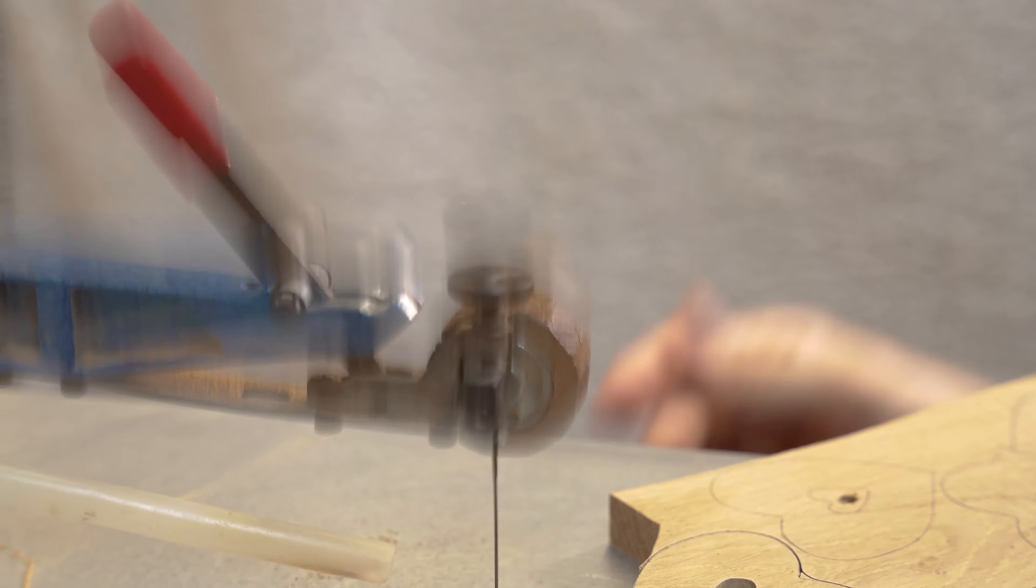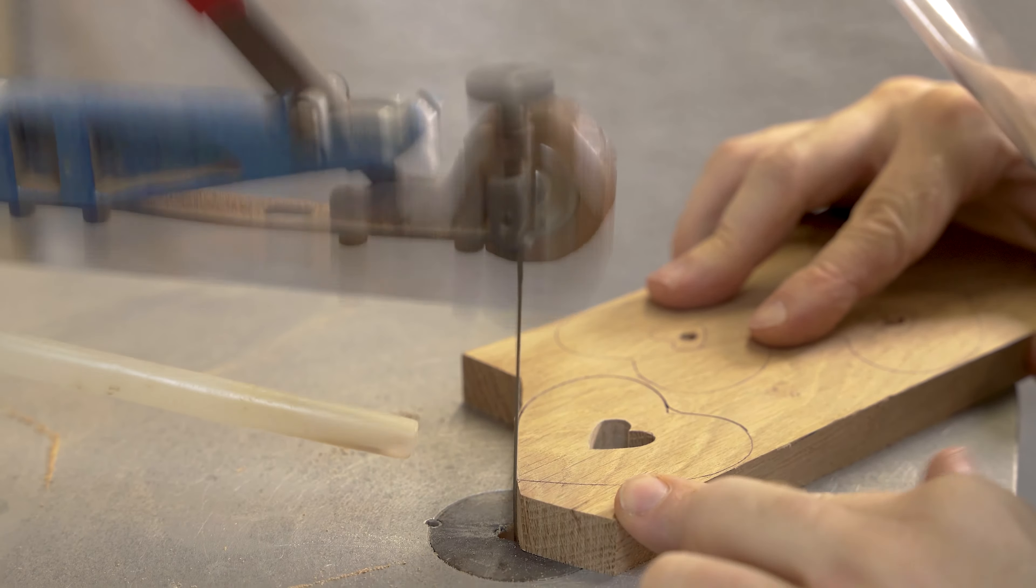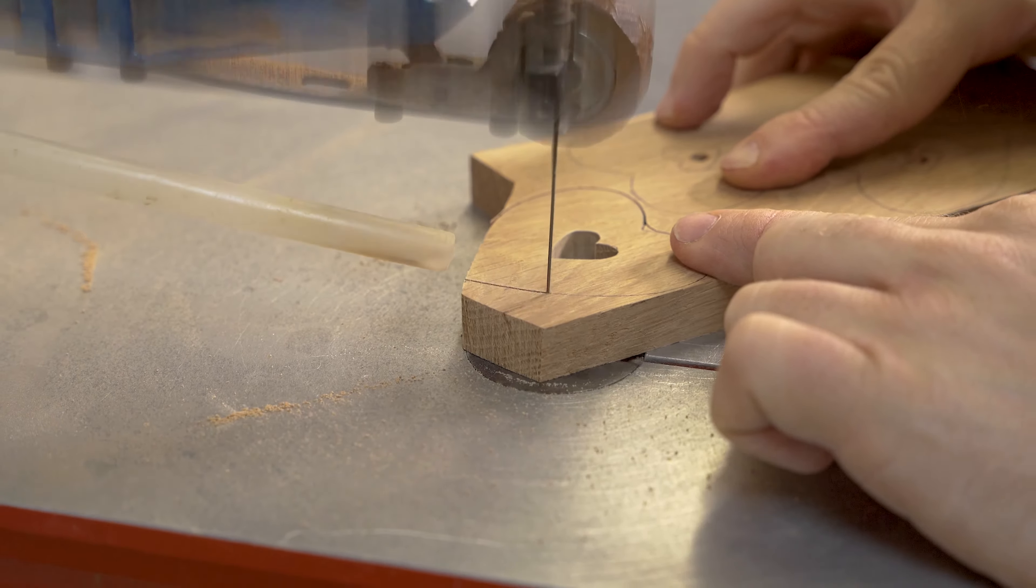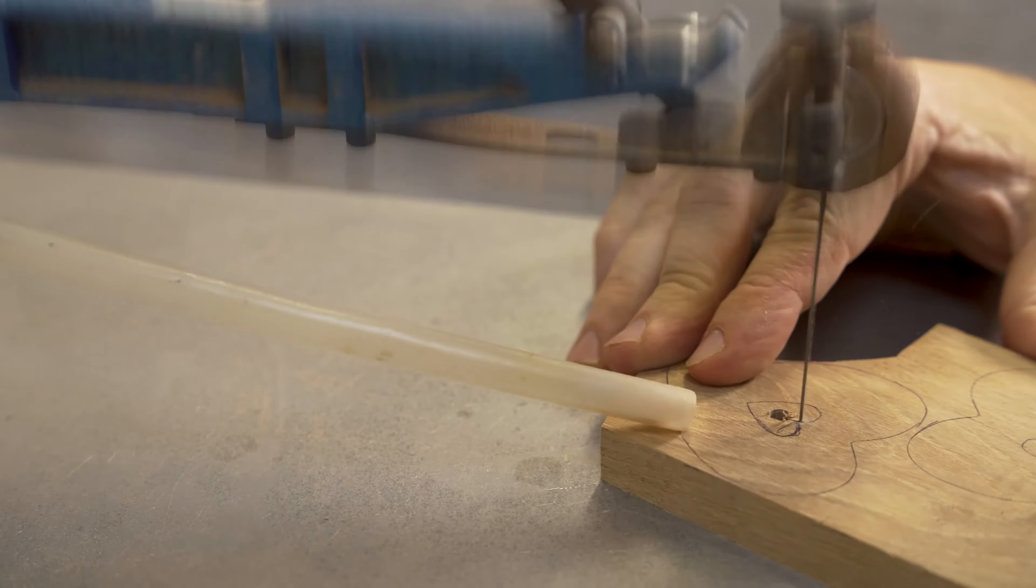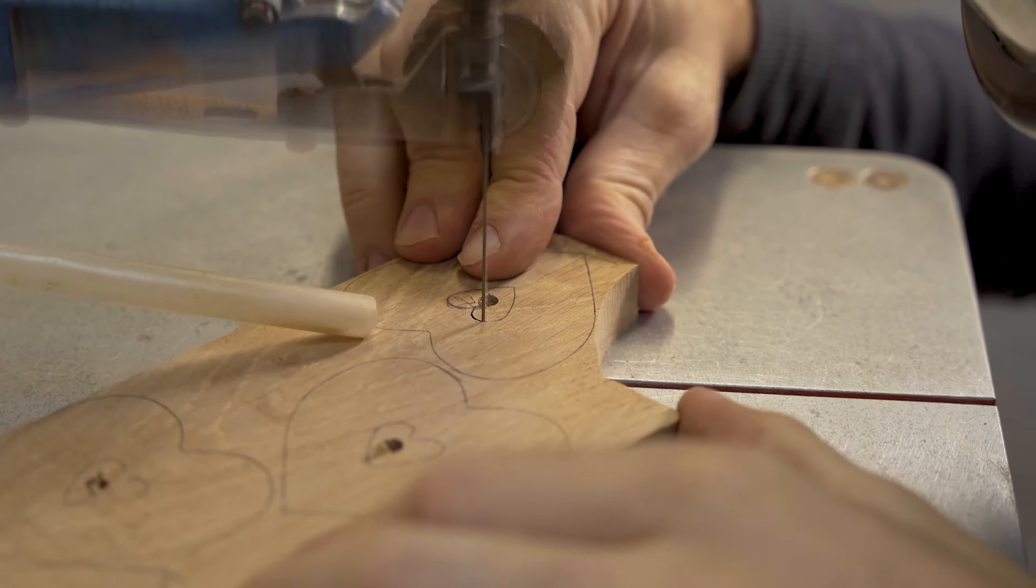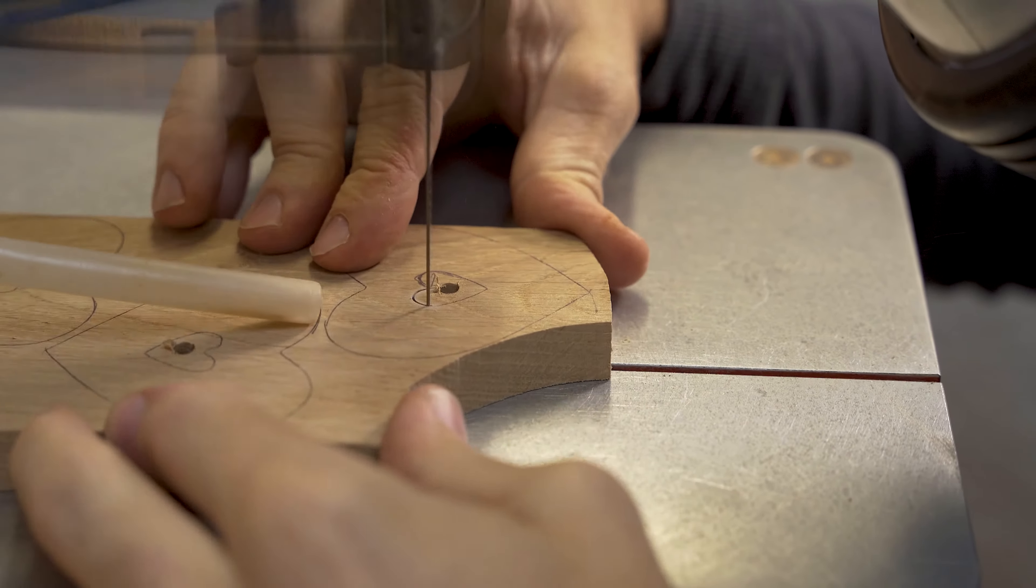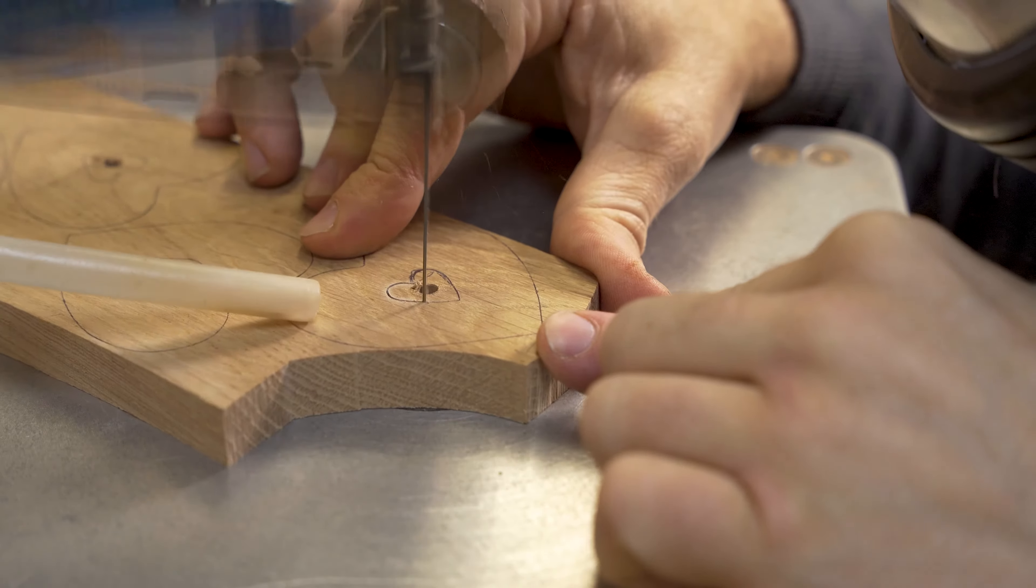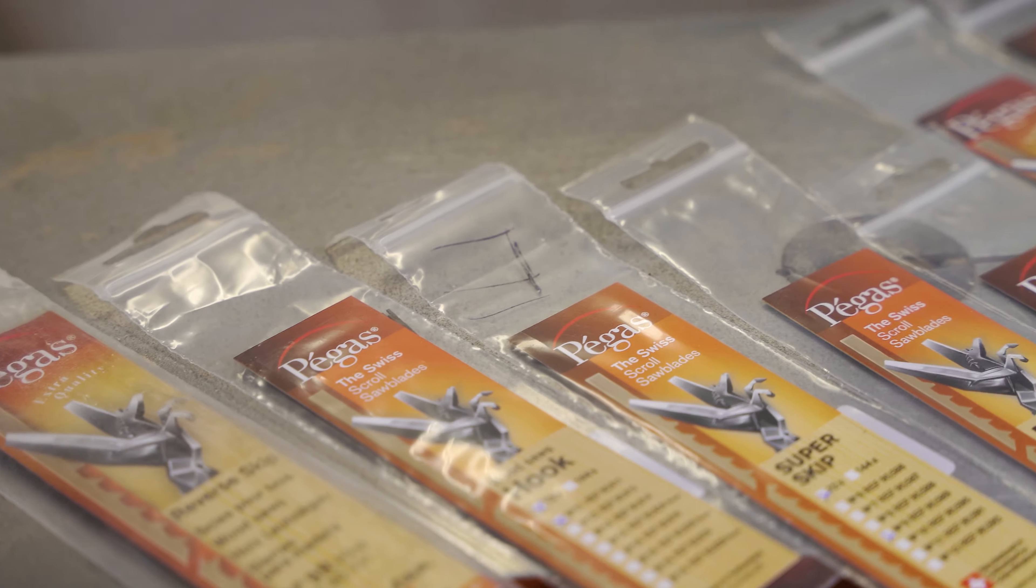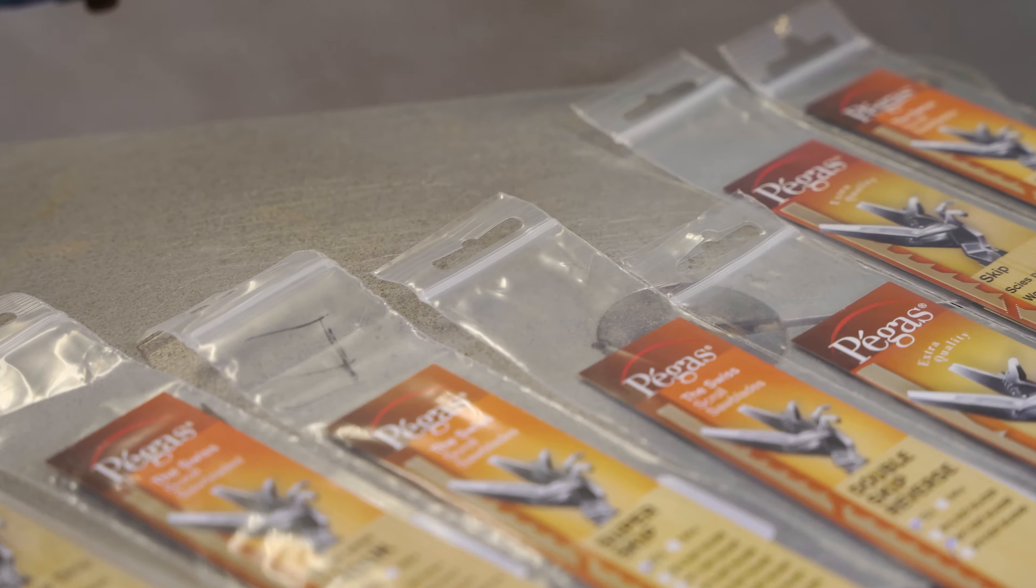However, if we compare the Pegas number 9 reverse tooth blade with the Niquot Speed reverse tooth number 9 blade and the Flying Dutchman number 9 reverse tooth blade, out of the three it was actually our least favorite. The number of different scrollsaw blades offered is certainly a strong point of what they have to offer.